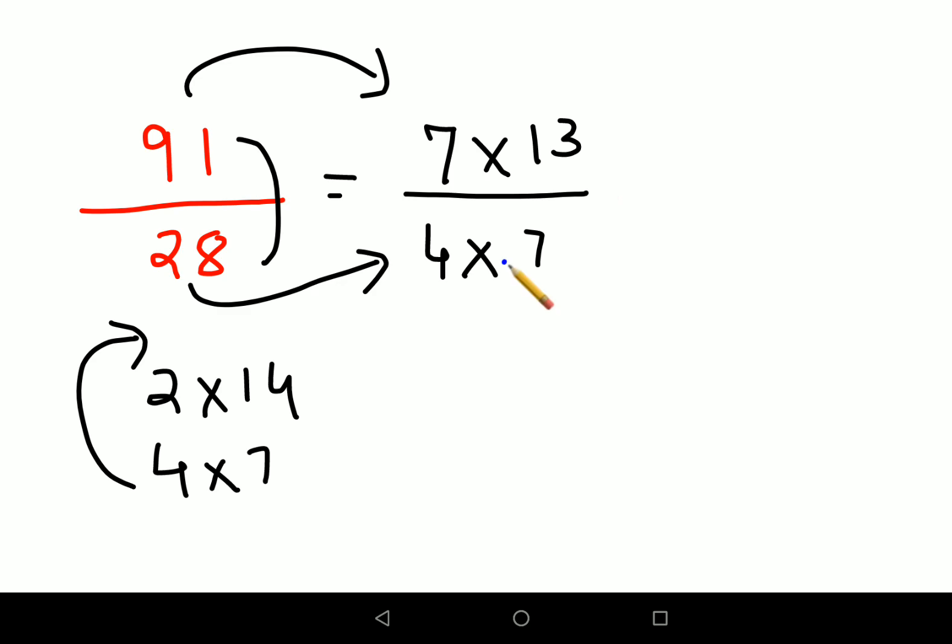What happens is you can cancel the 7s, so you're just left with 13 upon 4. Now 13 upon 4 division is very easy because you get 3.2, and then you have 3.25.